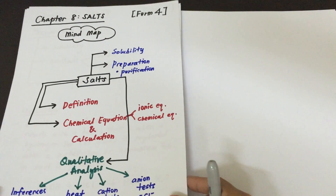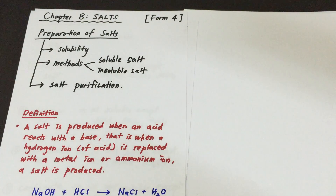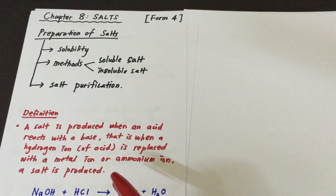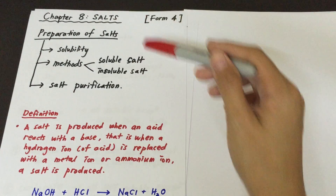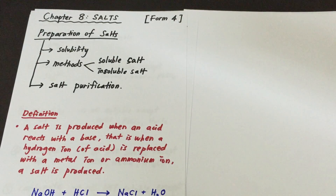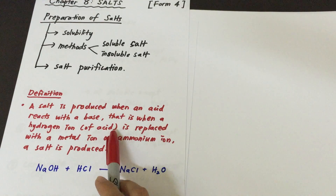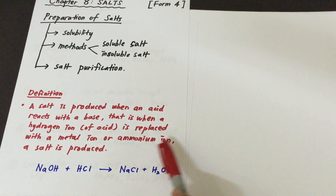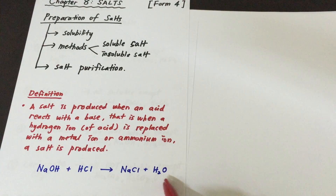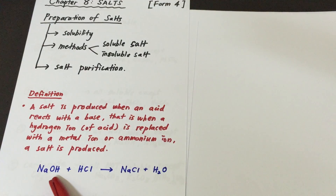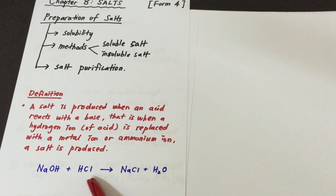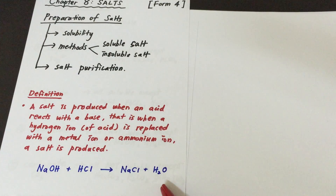So we start with the definition. A salt is produced when an acid reacts with a base — that is, when the hydrogen ion of the acid is replaced with a metal ion or ammonium ion. For example, when NaOH (sodium hydroxide) reacts with HCl (hydrochloric acid), we obtain NaCl (sodium chloride) and H₂O (water).